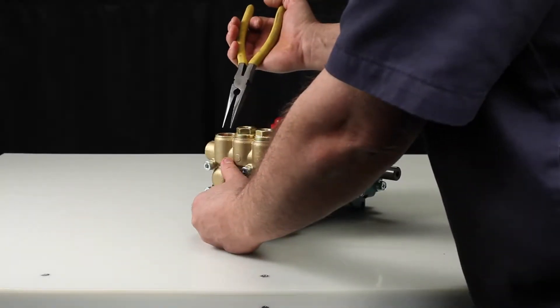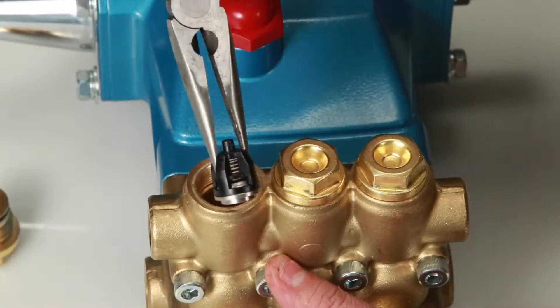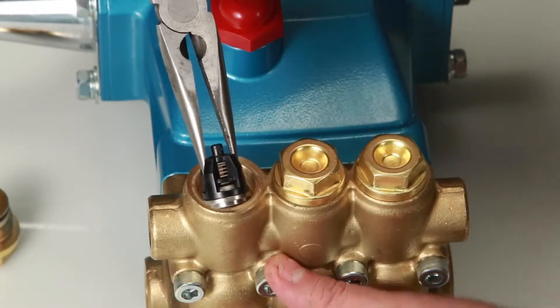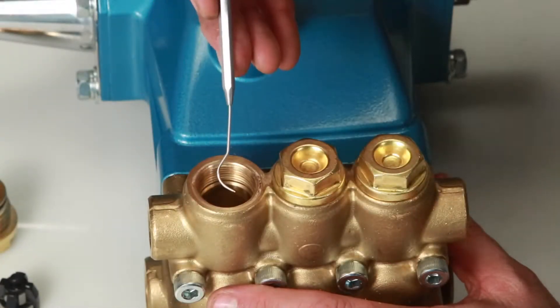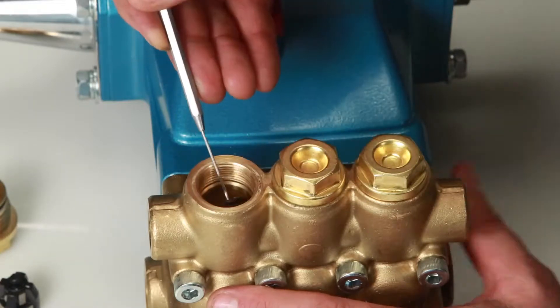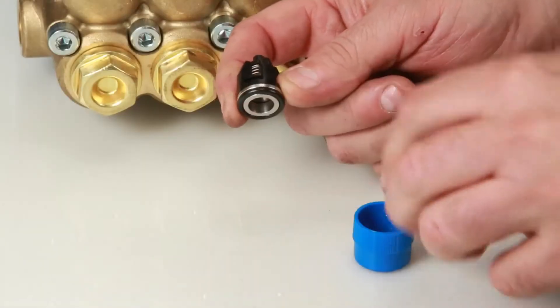To remove the valve assembly, use a needle-nose pliers grasping the top of the spring retainer. Give a small twist while pulling away from the manifold to remove. When removing the valve assembly, the O-ring may remain in the manifold. Using a small pick or screwdriver, reach into the manifold to remove.